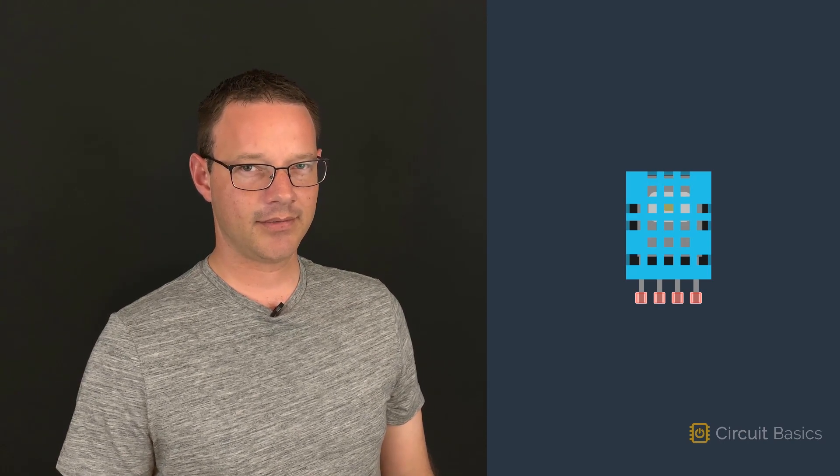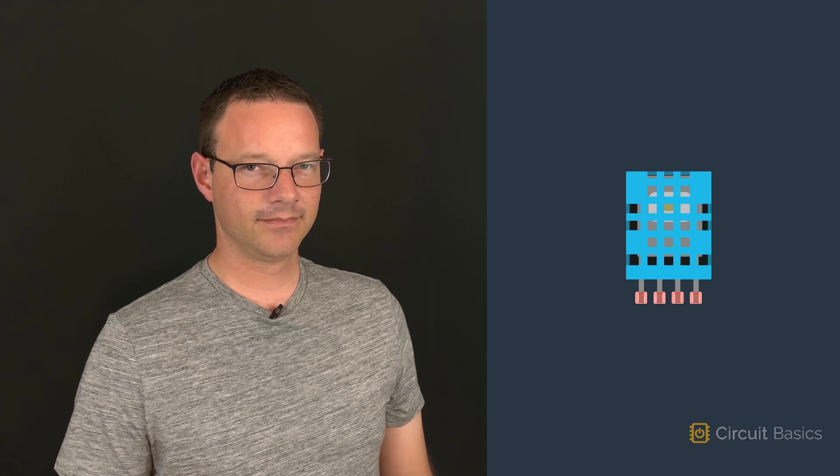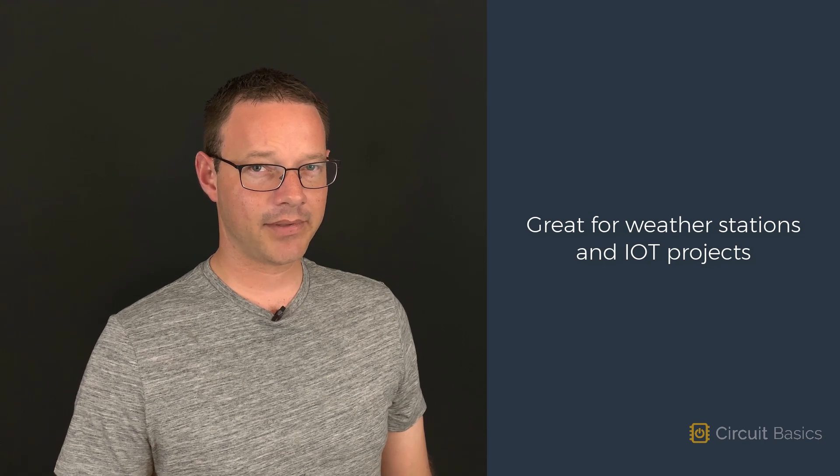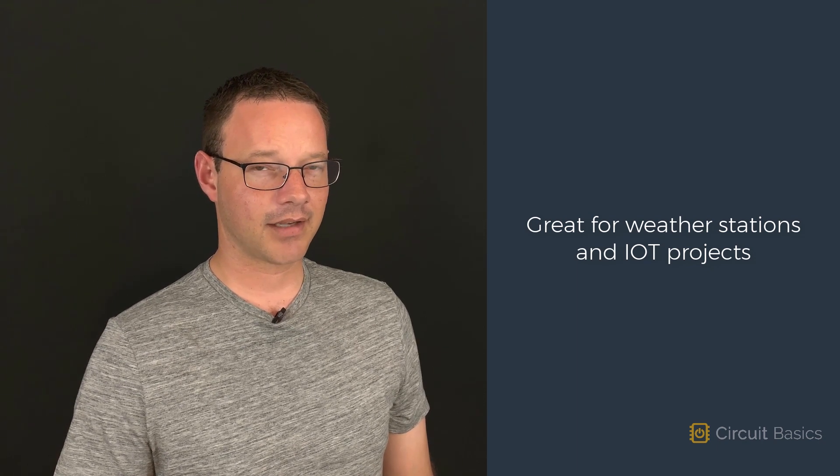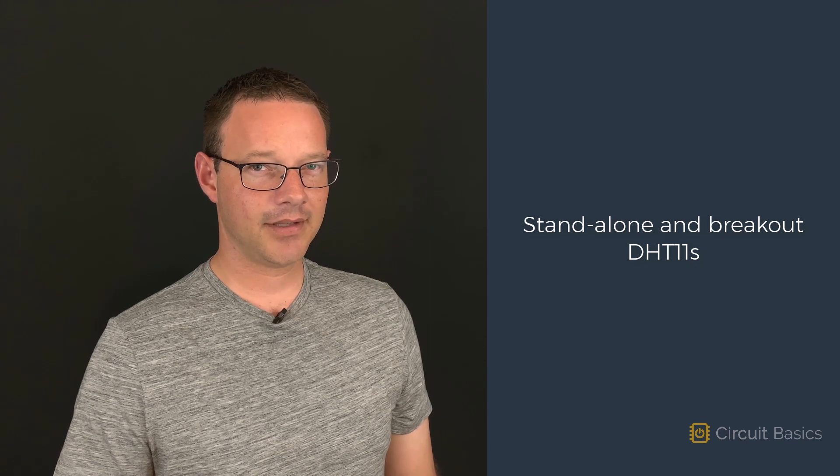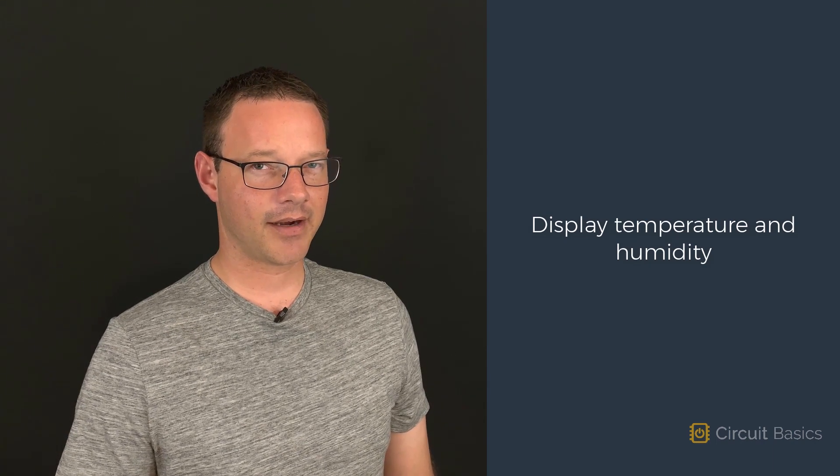One of the most useful sensors you can use with the Arduino is the DHT11 humidity and temperature sensor. It's accurate and really easy to use, which is why they're so popular in weather stations and IoT projects. In this video, I'm going to show you how to set up a couple different variations of the DHT11 on the Arduino. Then we'll see how to print the humidity and temperature measurements to the serial monitor.